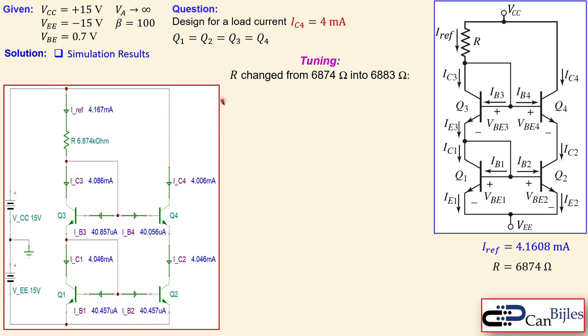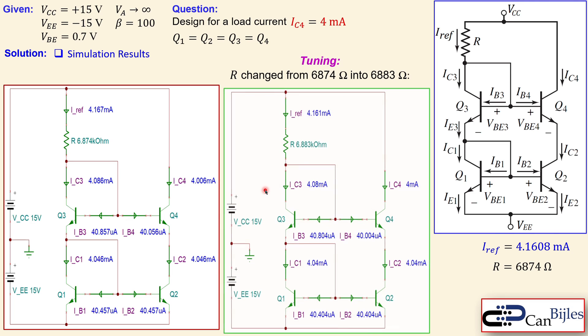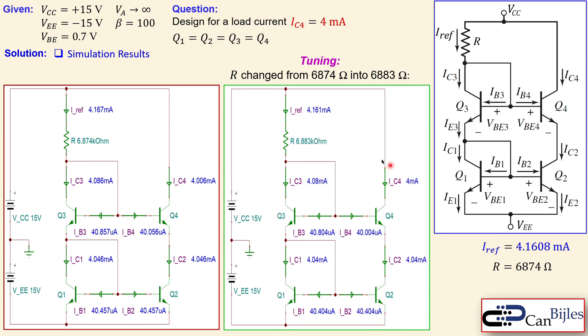After some trial and error, I changed this from 6874 to 6883, a slight increase. This results in exactly 4 milliamps. We get 4.161 milliamps—just rounding off by the simulator. You see they are exactly the same; only the resistor must be adjusted to this new value of 6883, and then the design is complete. This is our example considering the cascode configuration using BJTs.